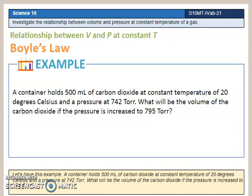Let's have this example. A container holds 500 milliliters of carbon dioxide at constant temperature of 20 degrees Celsius and a pressure of 742 torr. What will be the volume of the carbon dioxide if the pressure is increased to 795 torr?